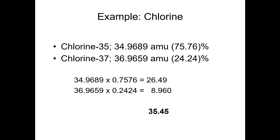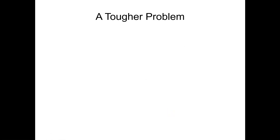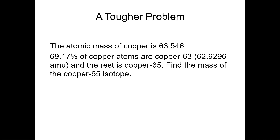You may have noticed in the earlier calculations with simplified atomic isotope masses that those values were coming out a little bit off. That's because I was using the wrong masses. When I use the correct masses, I get the actual value on the periodic table. Now let's look at a tougher problem — though it's really just algebra. The atomic mass of copper is 63.546. 69.17% of copper atoms are copper-63 with an isotopic mass of 62.9296 AMU, and the rest is copper-65. Find the mass of the copper-65 isotope.